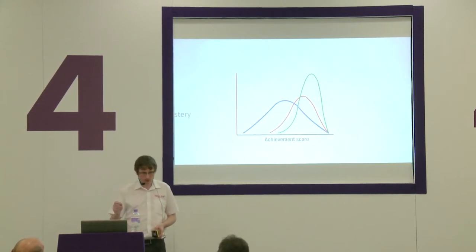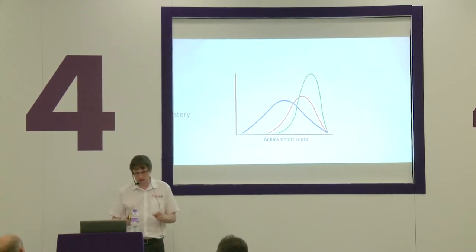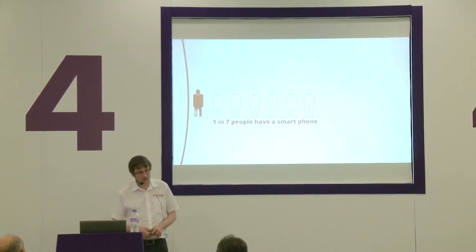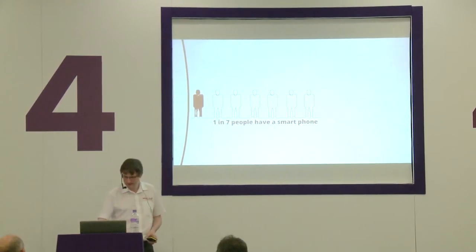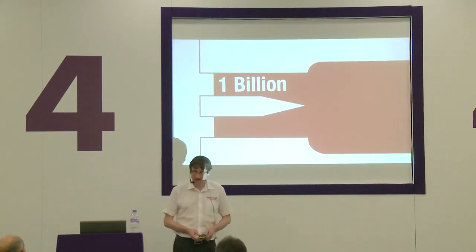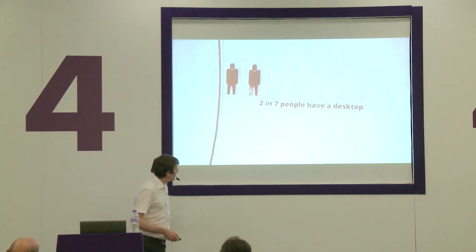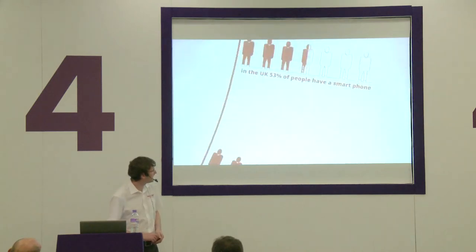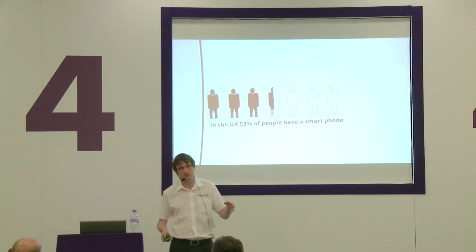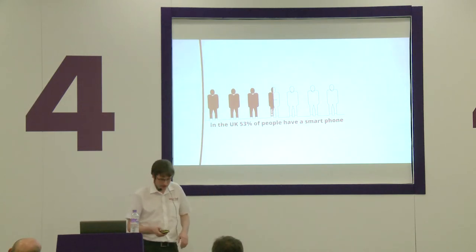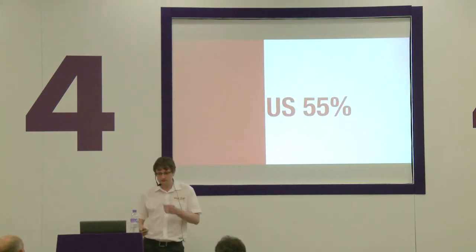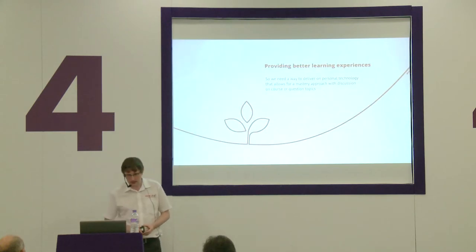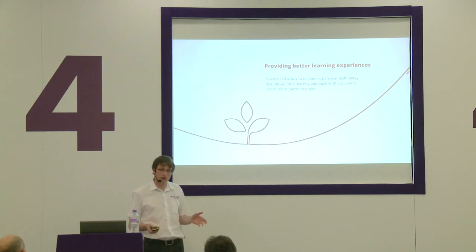We've got to push towards that green line and get individuals trained one-to-one. Perhaps we can use technology to do that. Currently, one in seven people globally have a smartphone — that's one billion people with access to a device. Two in seven people have access to a desktop PC, and in the UK, 53% of people have a smartphone. In the States, that's 55%. Technology is not the issue. We have the technology to deliver one-to-one training. We need a way to deliver personal technology that allows for a mastery approach with discussion on course and question topics.